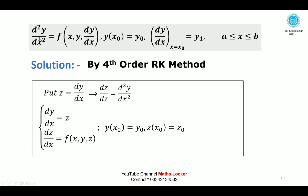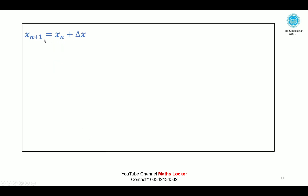The second order differential equation is converted by substitution into two first order differential equations. The iterative update formulas are: xₙ₊₁ = xₙ + Δx, giving the next value along the x-axis; yₙ₊₁ = yₙ + Δy, the next value of y; and zₙ₊₁ = zₙ + Δz, the next value of z.